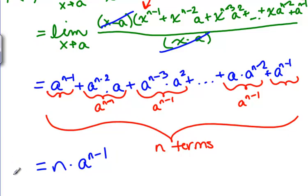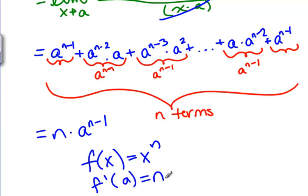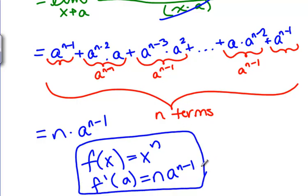So what we've shown is that the derivative, if F of X is X to the N, then F prime of A is N A to the N minus 1. And so we've shown the power rule is actually true.